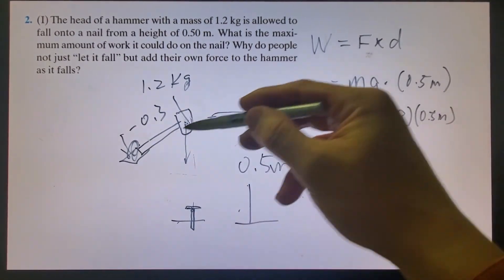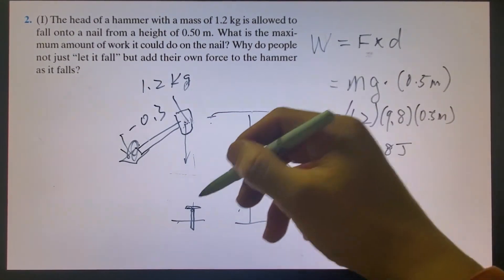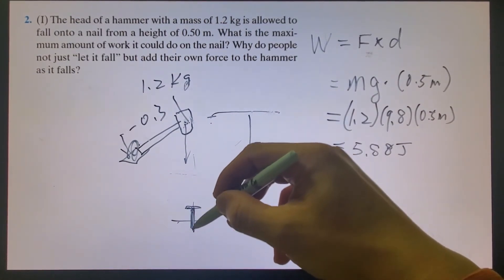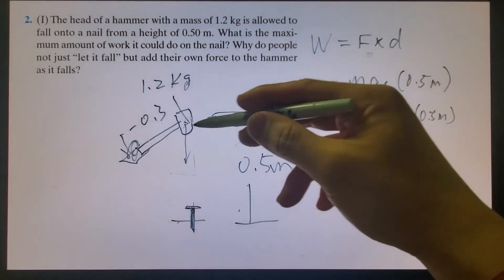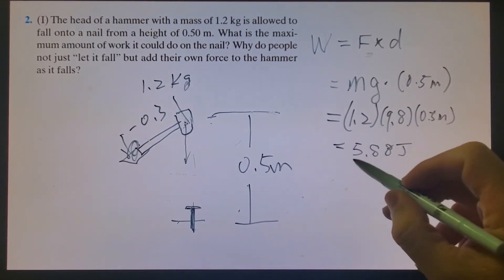Usually this is a big nail going into wood, and you may need to add more force to it because only 5.8 joules is not enough for a nail to get in.